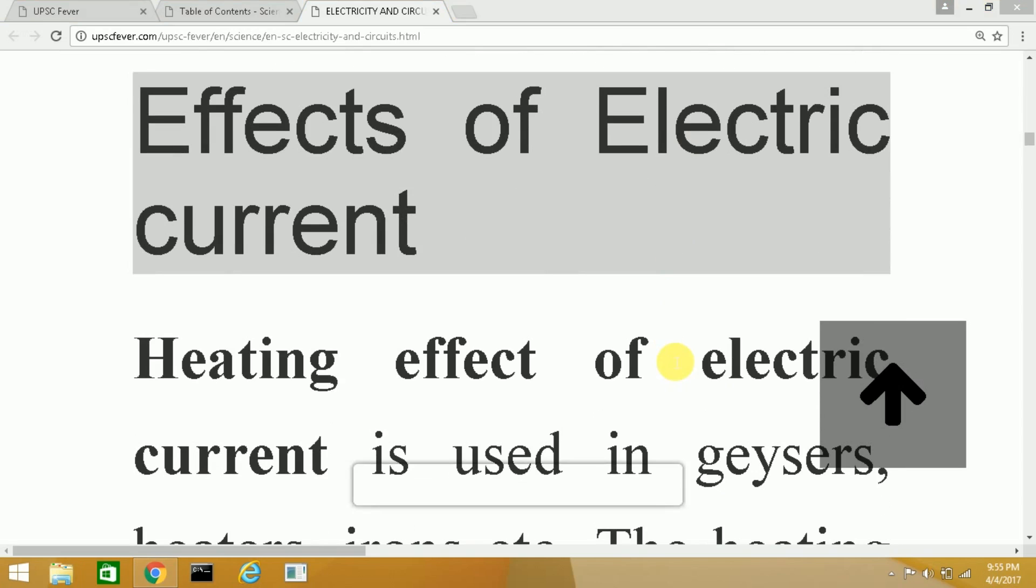The heating effect of electric current is used in many applications like geysers, heaters, and irons, and it is also observed in the light bulb. Because there is a tungsten filament present inside a normal light bulb, when electricity passes through it, it gets heated and then emits light.